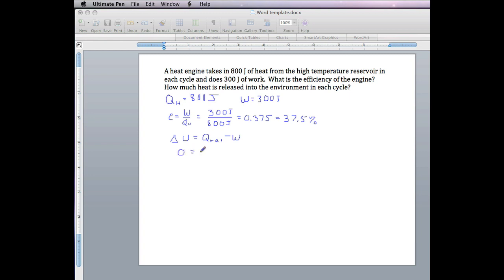So 0 equals Q net minus W. We can put the W on the other side of the equation, and we get W equals Q net.